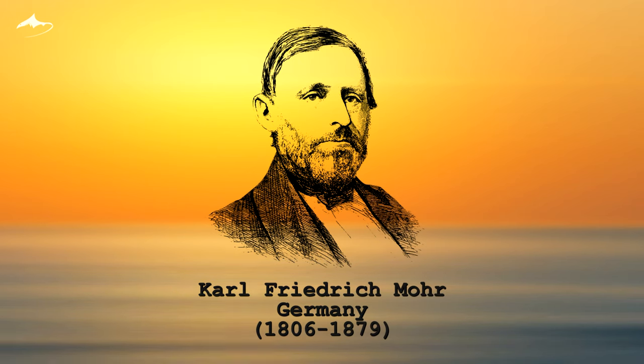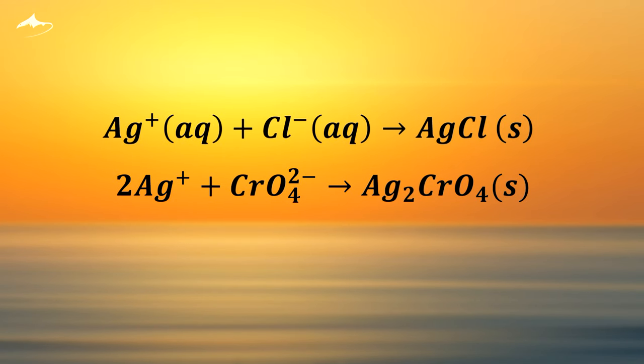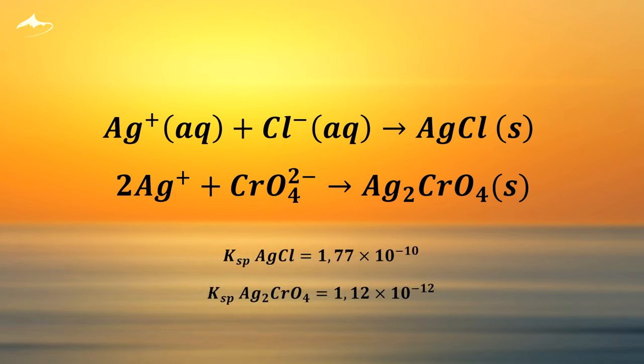The Mohr's method consists of the precipitation of chloride anion by the addition of silver cation, in which the endpoint is observed by the formation of silver chromate, which is colored. Here are the equations. Above you see the titration reaction and below the indicator reaction. Below that are the solubility product constants.